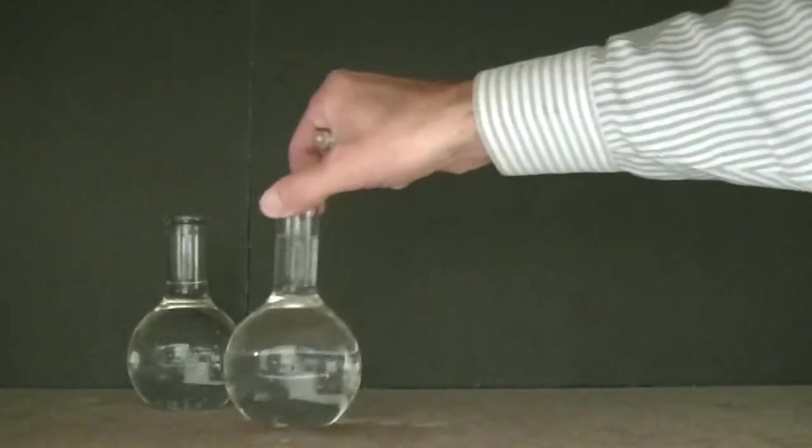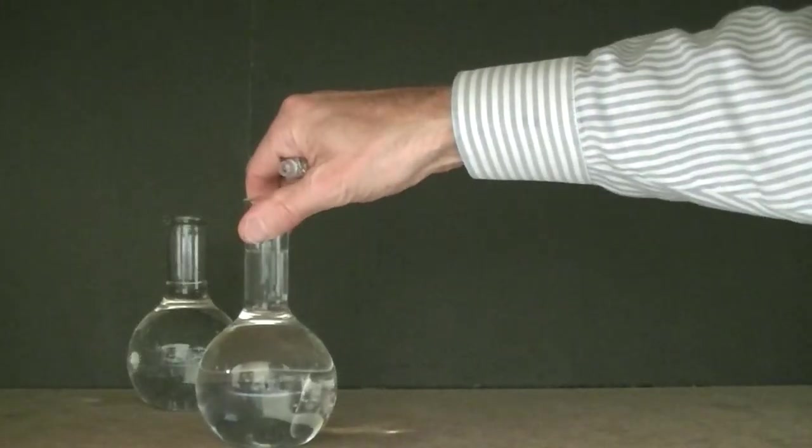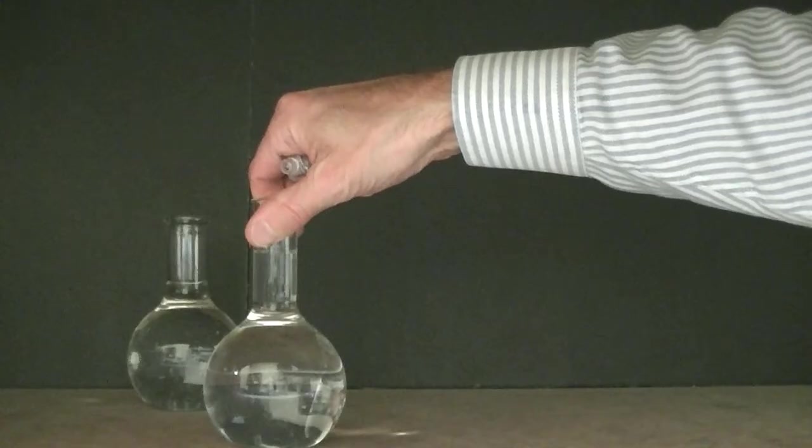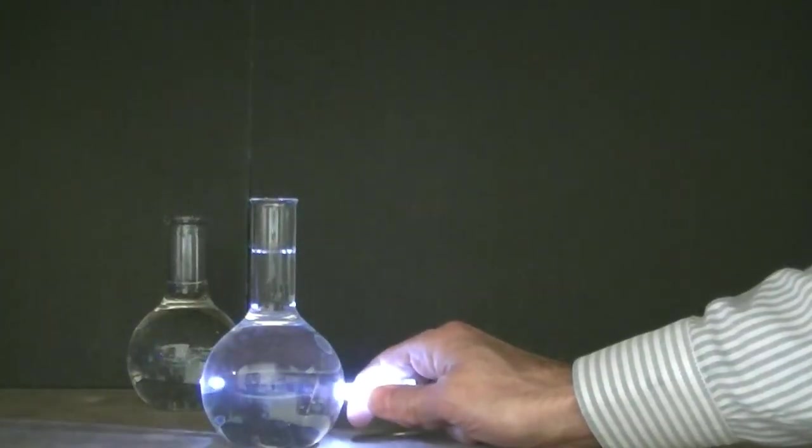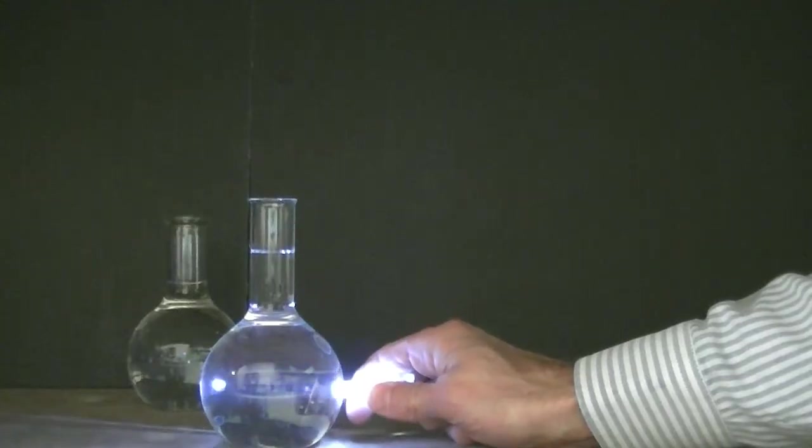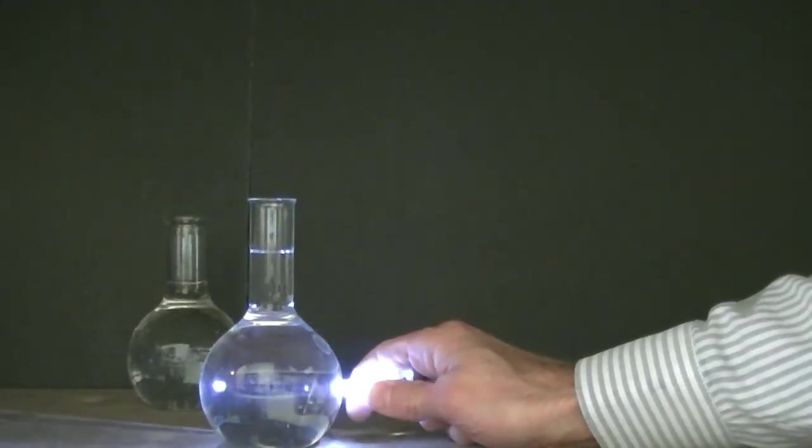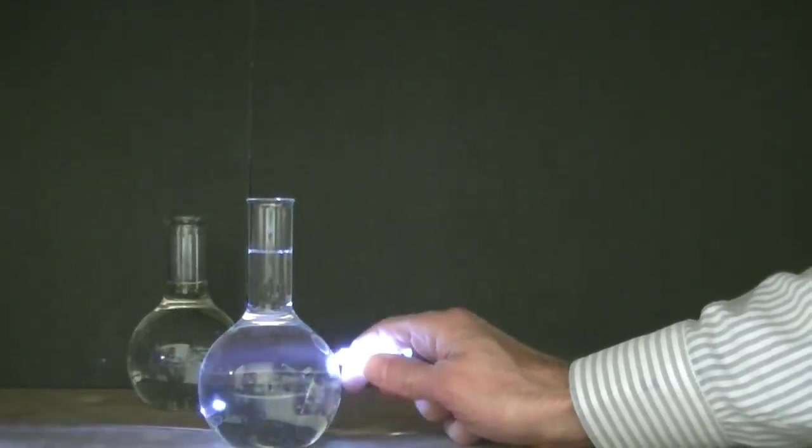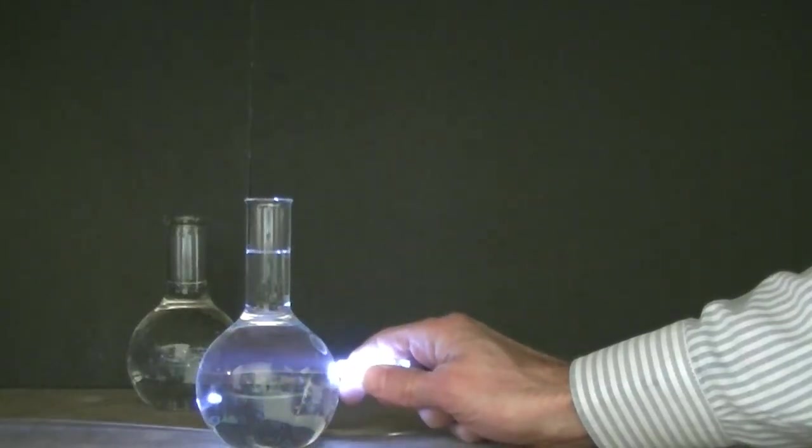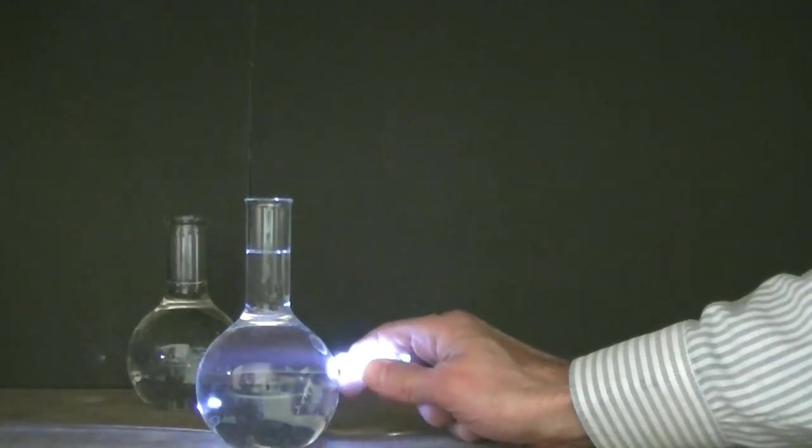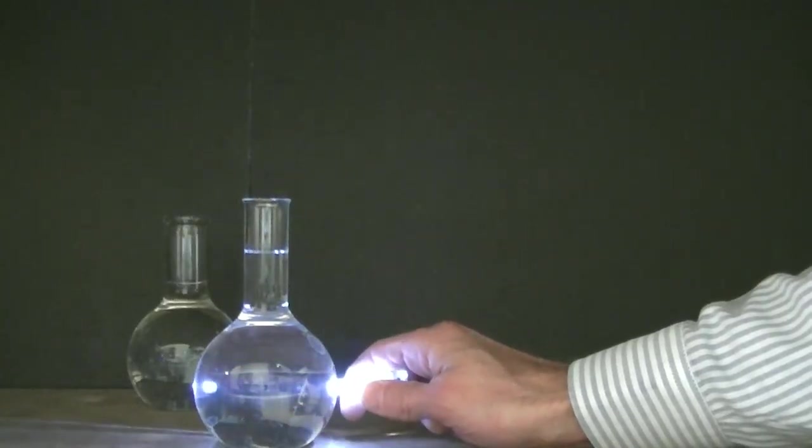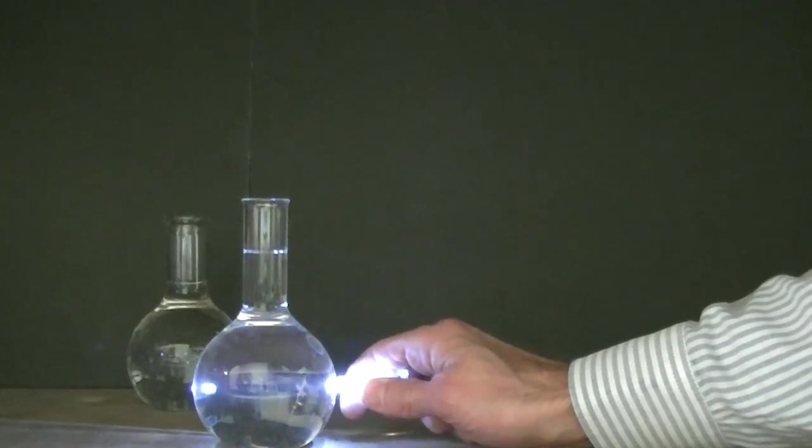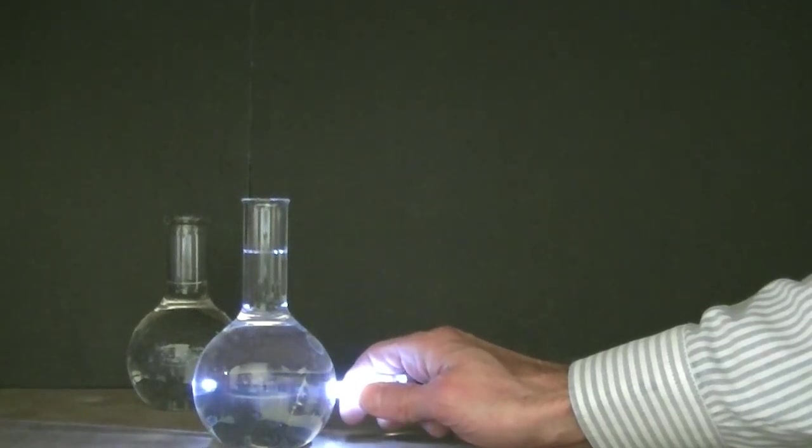Here I have what many people call a solution of soap and water. But if I pass light through it, we see that indeed that light is getting scattered. So it might not be appropriate to call this a solution of soap and water. Somehow it's a heterogeneous mixture. There are some particles in there that are scattering the light, which tells me that this mixture here is a heterogeneous one.